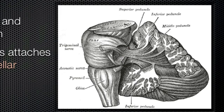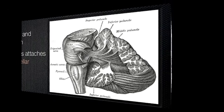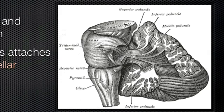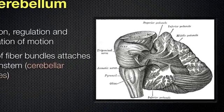These peduncles connect to different regions. The superior peduncles connect to the upper pons. The middle peduncles connect to the lateral aspect of the pons, right here. And the inferior peduncles connect to the dorsolateral surface of the upper medulla. So the medulla here — dorsal meaning to the back, and lateral — we're dealing with the upper medulla in this area. That's where the inferior peduncles connect.